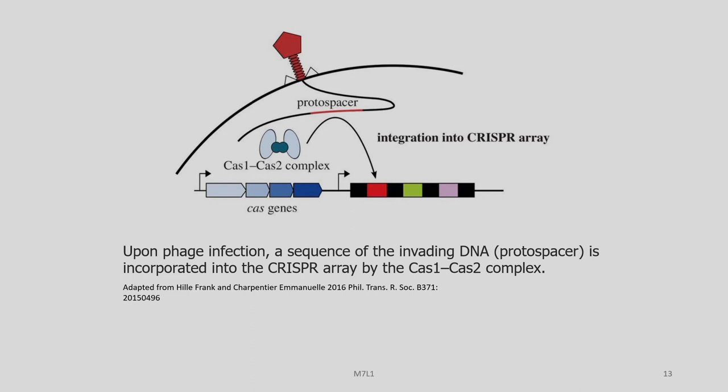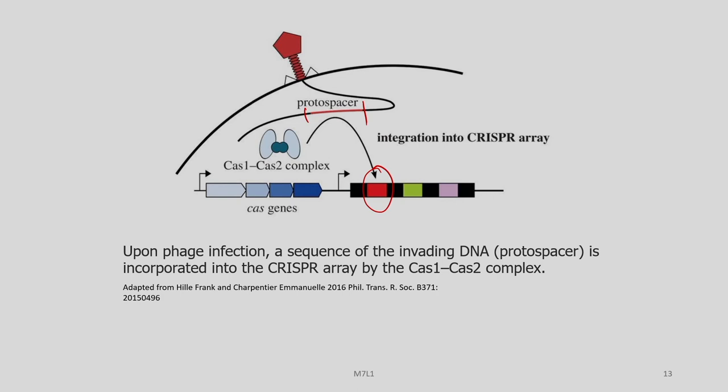Let us look a little more closely at how this system works. Once a virus attacks a bacterial cell and injects DNA inside it, the CRISPR-Cas loci produce a complex called the Cas1-Cas2 complex. This Cas1-Cas2 complex will cleave a selected portion of the viral DNA and insert it into the existing CRISPR array. With each infection, the length of this array keeps on increasing. So the CRISPR array is also a kind of scoreboard where we can know how many times a particular bacterial strain has been infected by viruses in the past.